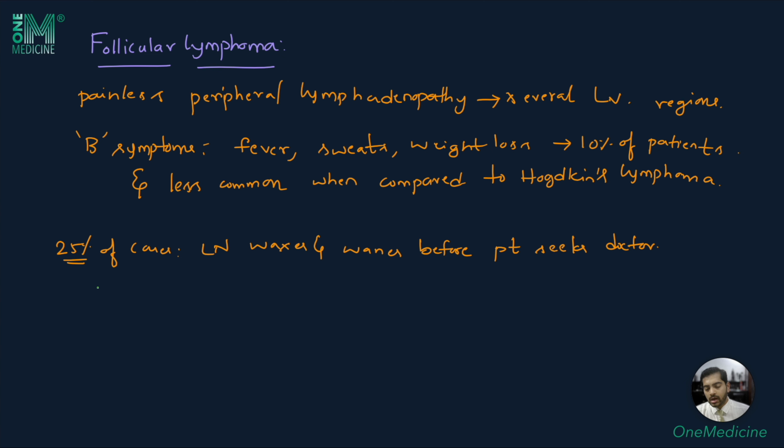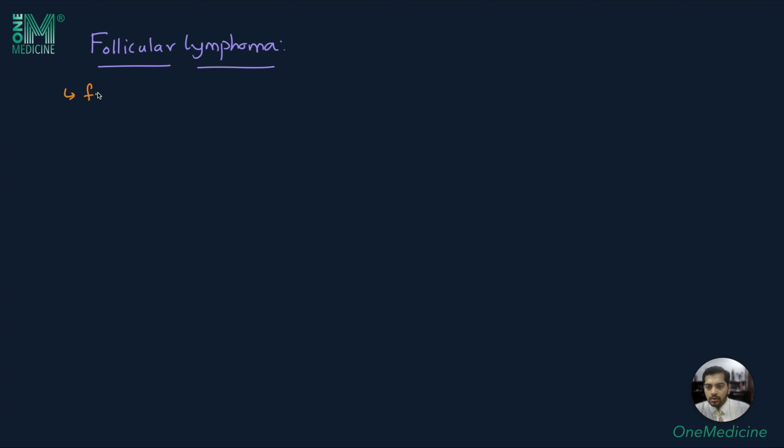The median age of follicular lymphoma is 55 years, and the disease is usually widespread by the time the patient comes to the doctor in about 85% of the cases. The extranodal sites that are commonly involved include liver and bone marrow. The tumor has a follicular or nodular growth pattern.